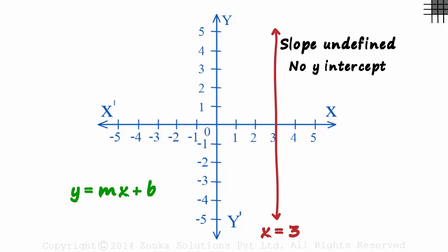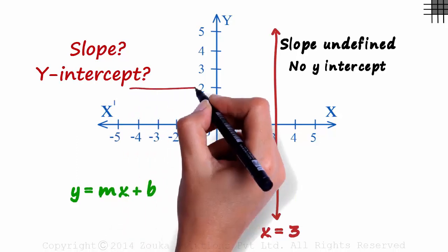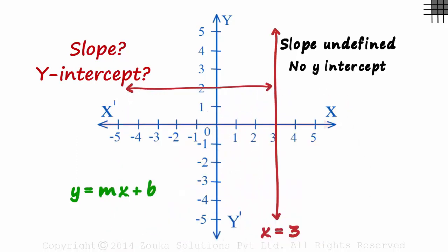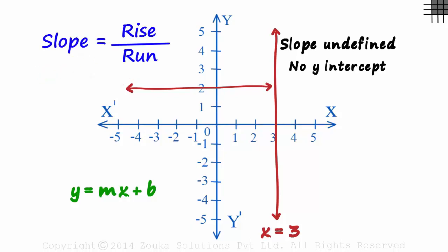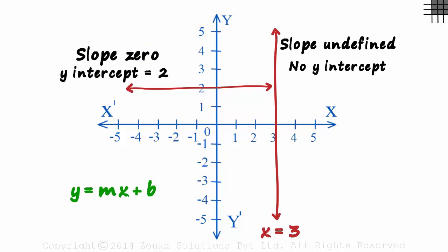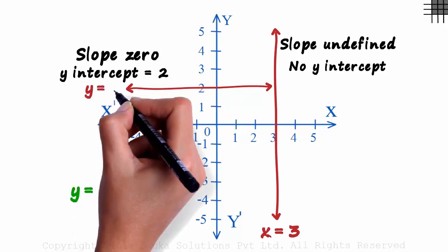Here's an interesting question for you. What do you think will be the slope and the Y intercept of this line, which is parallel to the X axis? It has no tilt. The rise is zero. The slope of this line will be zero. As it meets the Y axis at two, the Y intercept will be two. And the equation of this line is Y equals two.